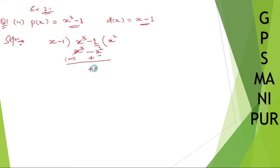So write down plus x square. Take the new sign — plus x square and minus 1. Now x into x square — so x square into x will be x square.